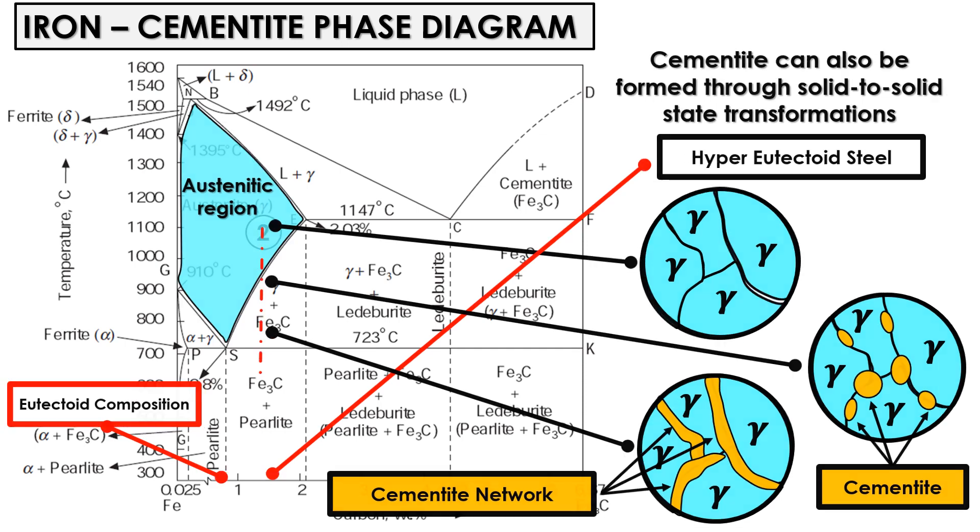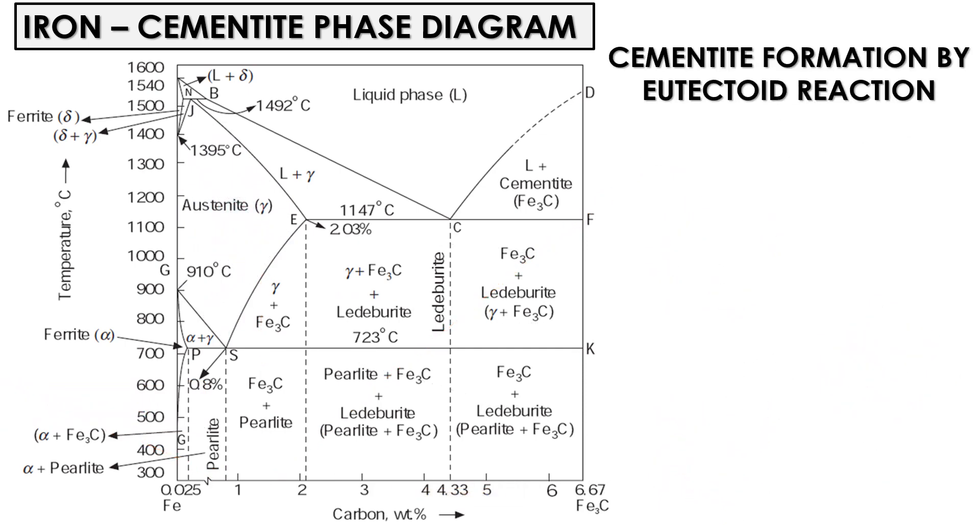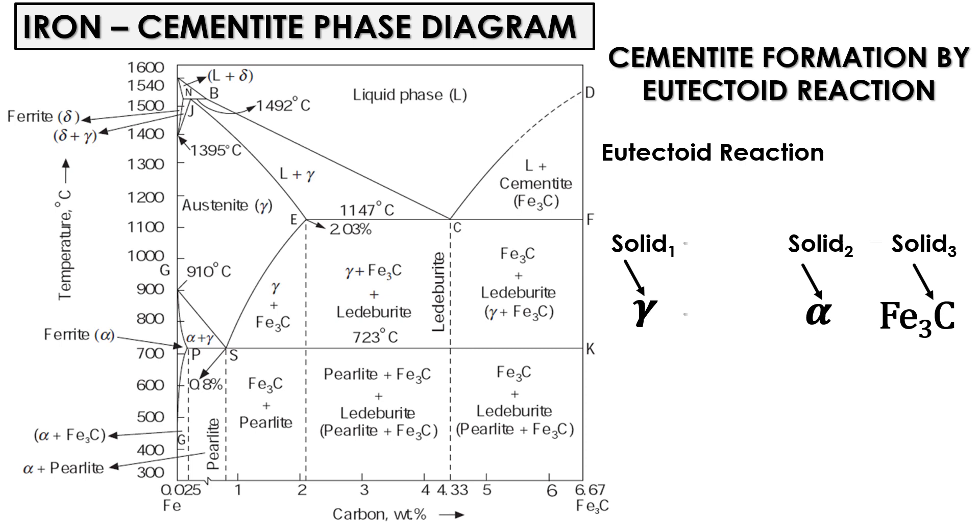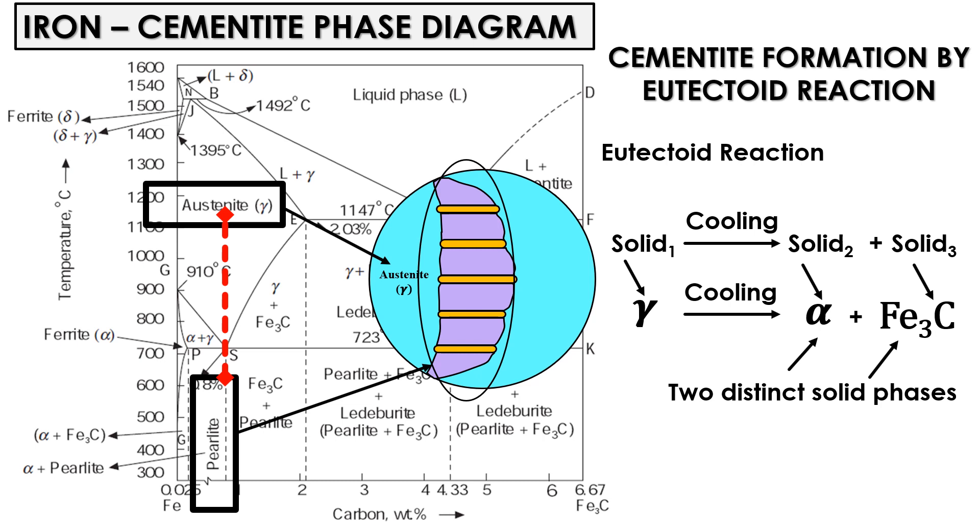The cementite phase can also be formed by the eutectoid reaction. A eutectoid reaction is a type of phase transformation that involves three phases. During this reaction, as a solid material undergoes cooling, it simultaneously transforms into two distinct solid phases. In the iron-carbon phase diagram, the eutectoid reaction results in the formation of pearlite phase from the austenite phase.